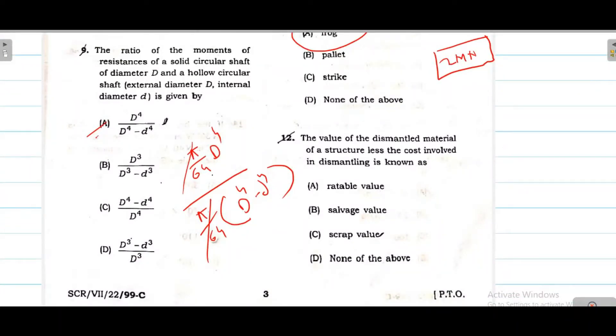The value of dismantled material of a structure less the cost involved in dismantling - what is the dismantling worth? That means the value is less. That means scrap value is the answer. If without dismantling, then the answer will be salvage value.